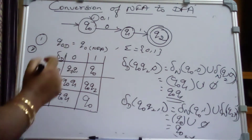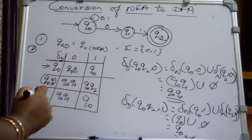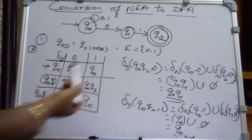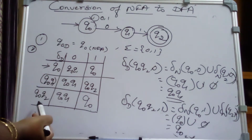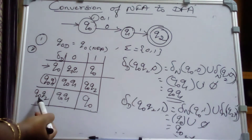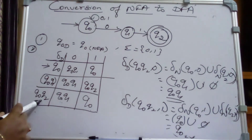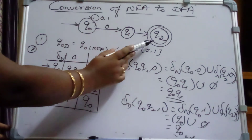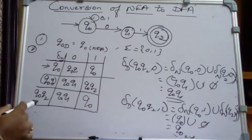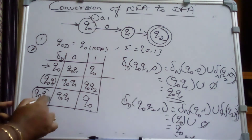Now identify the starting state and the final state. The starting state is Q0. For the final state, observe the NFA — Q2 is the final state in the NFA. So any DFA state that contains Q2 will be our final state. Here Q2 is present in the state {Q0, Q2}, so {Q0, Q2} becomes our final state. Mark this as the final state.